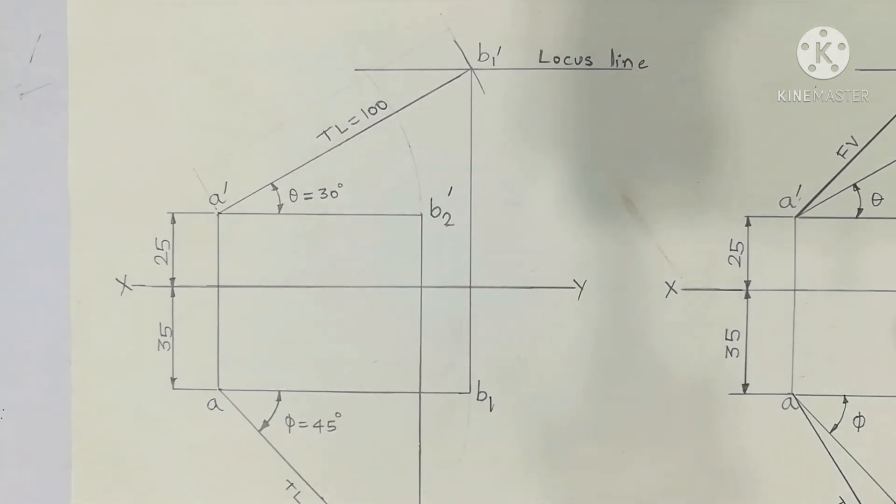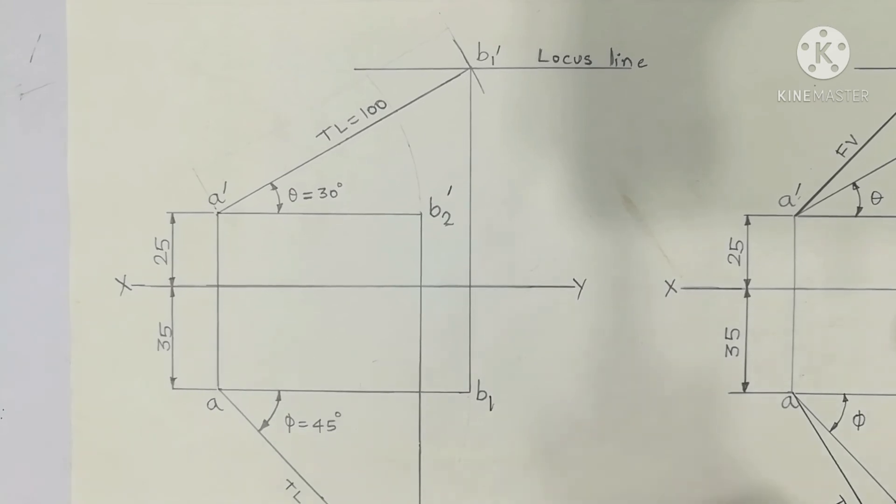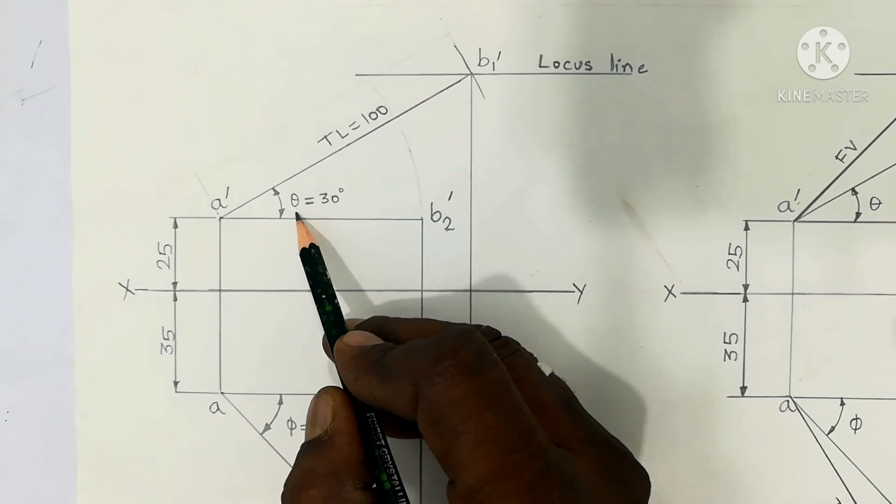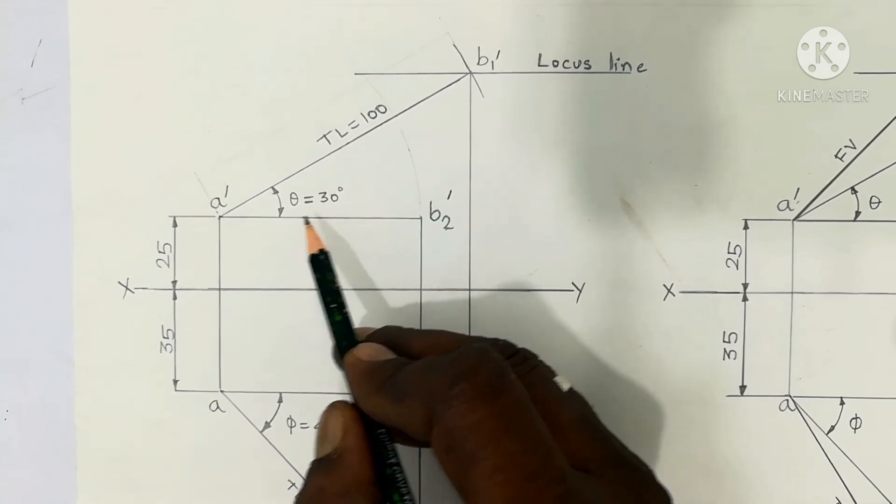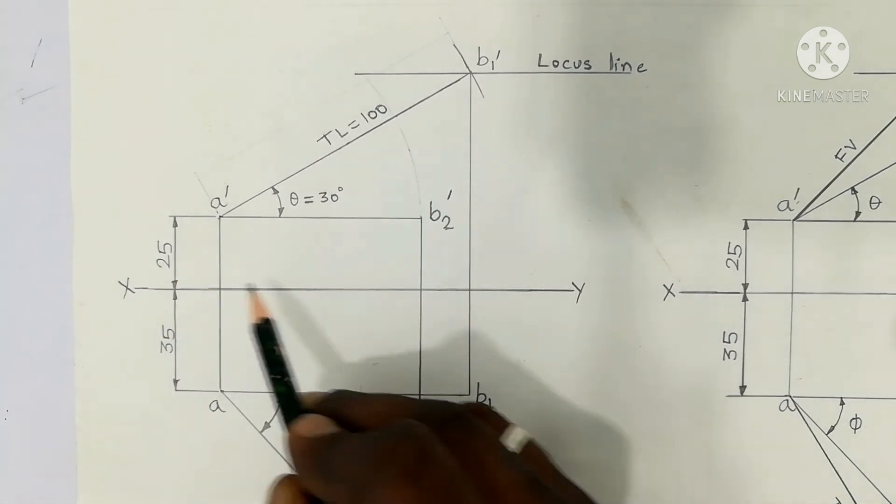Please refer to previous videos on projection of straight lines. I have a playlist you can refer to on the first day. It will be very useful for you. True inclination with HP, the inclination will always come above the XY line.